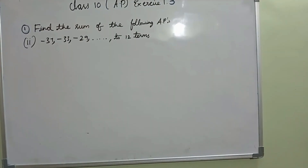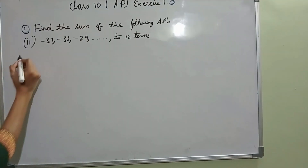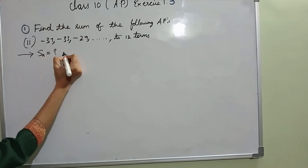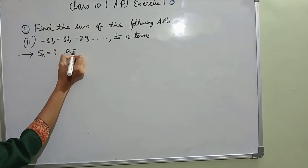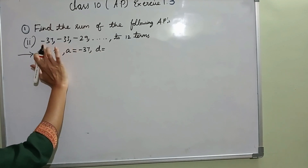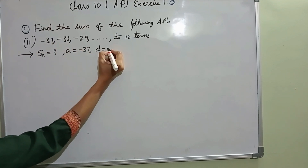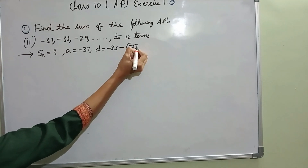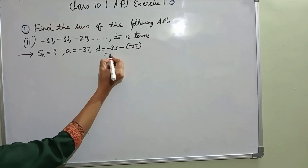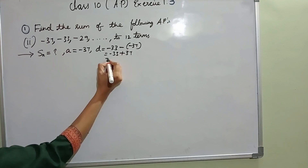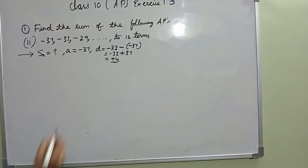In the next problem we also need to find the sum, that is SN. They have given A equal to minus 37. D is second term minus first term: minus 33 minus into minus equals plus 37. Minus 33 plus 37 gives D equal to plus 4.